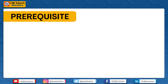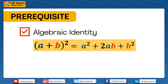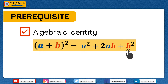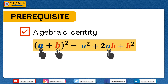We will be needing the algebraic identity a plus b squared is equal to a squared plus 2ab plus b squared. The first term of the expanded form is equal to the square of the first term of the binomial. The last term of the expanded form is equal to the square of the last term of the binomial. And the middle term is equal to twice the product of the two terms of the binomial. If you would like to watch the visual geometric derivation of this identity, just click on the link above this video or in the description below. This identity can also be used as a guide in expanding the square of any binomial.